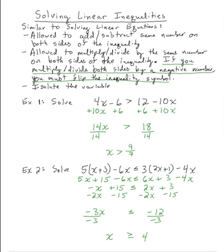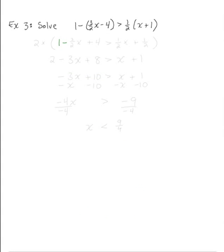And a third example. Solve 1 minus the quantity 3 halves x minus 4 is greater than 1 half times the quantity x plus 1. So again, I will simplify first by applying the distributive property. So that would give me 1 minus 3 halves x plus 4 is greater than 1 half x plus 1 half.